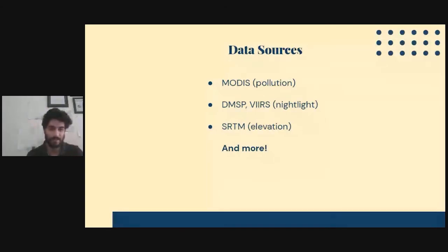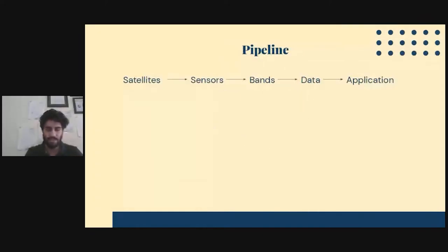Some other data sources that deserve mentioning here: a satellite called MODIS, which is again very good like Sentinel at measuring pollution. There's DMSP and VIIRS, which are very good for measuring nightlight. And there's SRTM for elevation. If you want to make digital elevation maps and see what the terrain looks like in an area. And of course, these aren't the only satellites out there. If you quickly Google it, you will find so many more data sources. And depending on your application, you can of course use any of them.